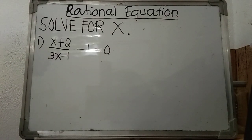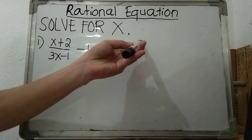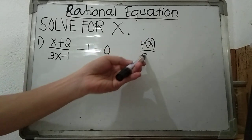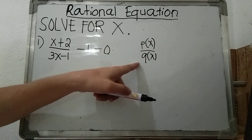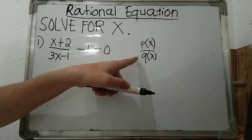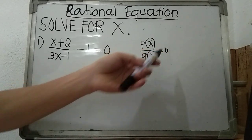Hello guys, in this video I will be discussing rational equations. A rational equation is an equation involving rational expressions. A rational expression is given by the symbol p of x over q of x, where p of x and q of x are polynomials with integers or rational coefficients that is equated to zero.